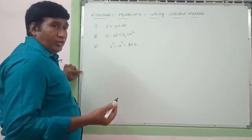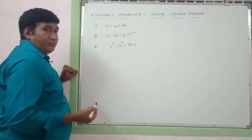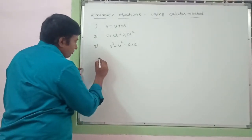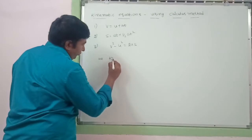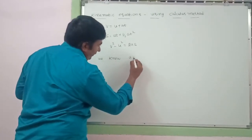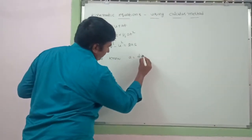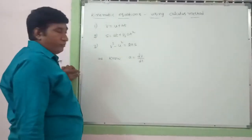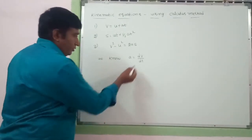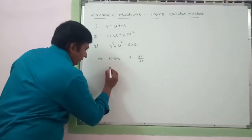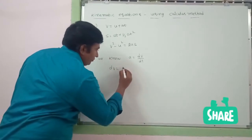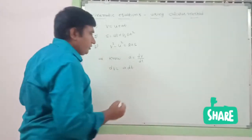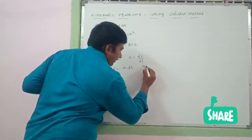From what we have learned with acceleration, we know acceleration a = dv/dt. For a small interval of time, sending dt over the other side, we get dv = a·dt. These kinematic equations are being proved under the condition that a is a constant.